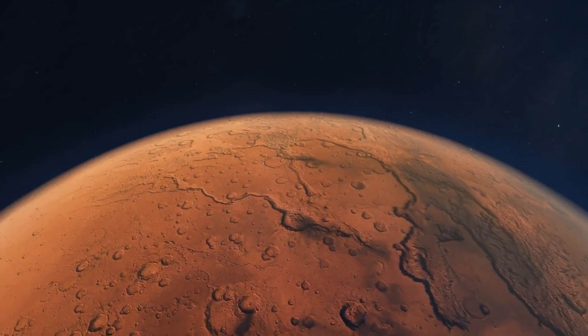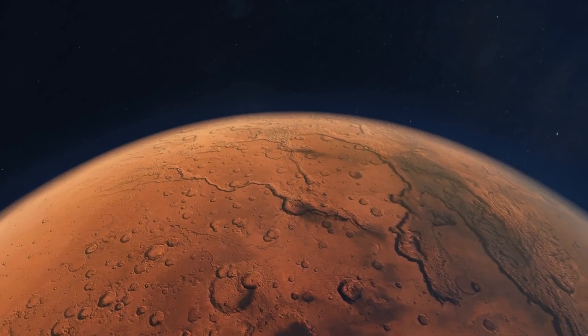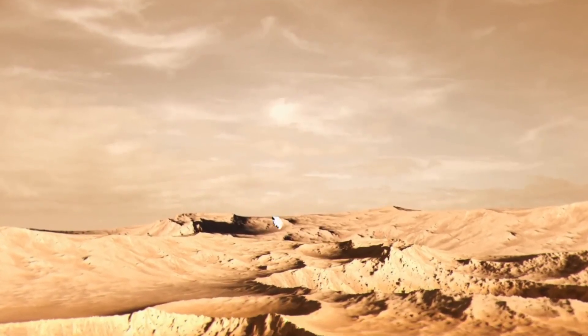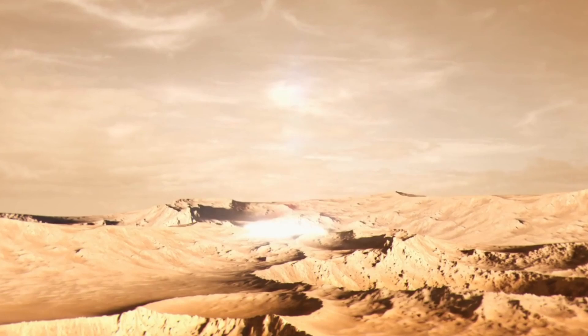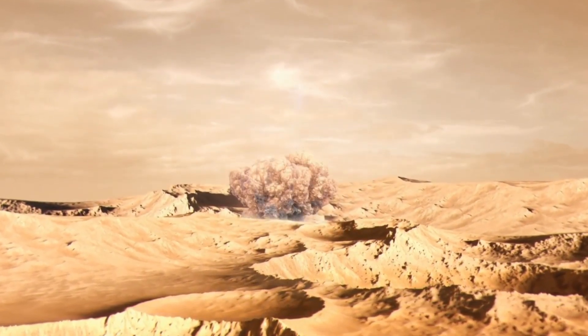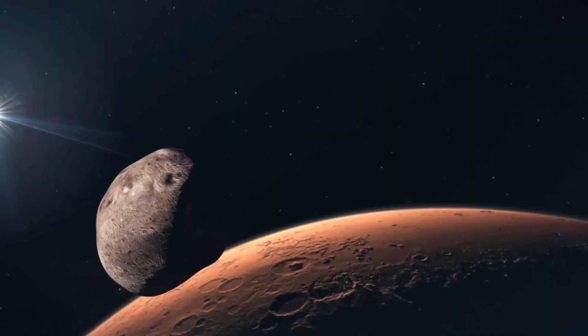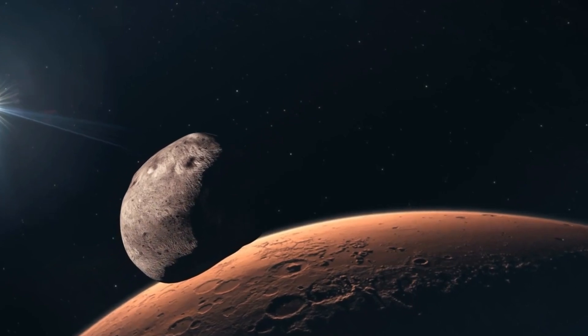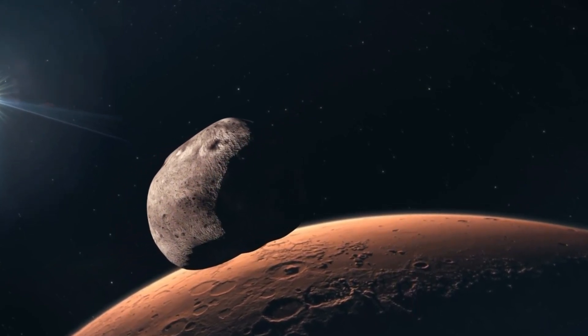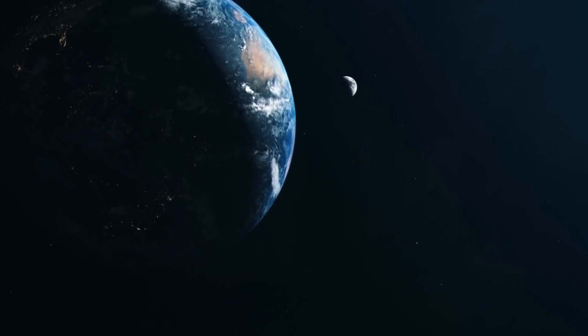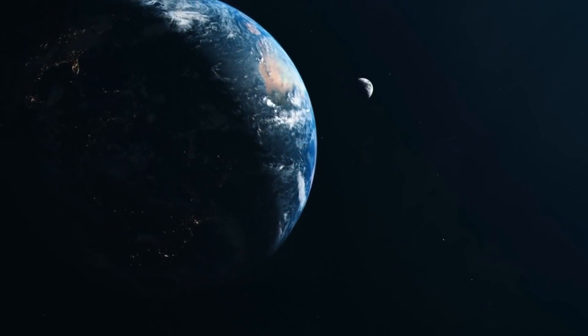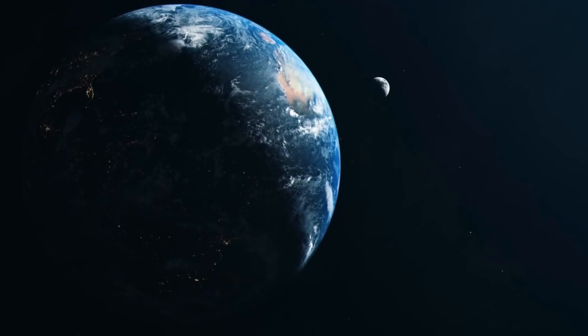Another compelling theory proposes that a colossal impact event in Mars' ancient history could have ejected debris into orbit around the planet. Over time, this scattered material may have gradually merged to form Phobos and Deimos. This process bears resemblance to the prevailing theory of the moon's formation around Earth, yet there are notable differences.